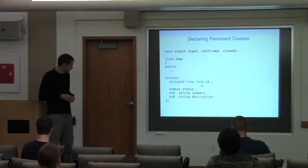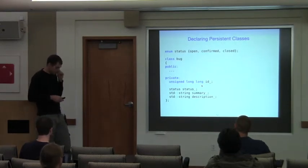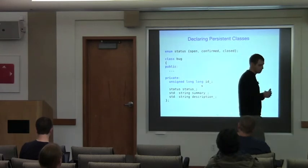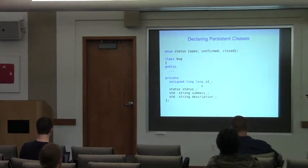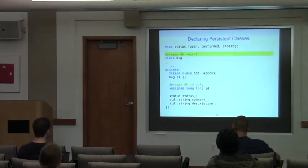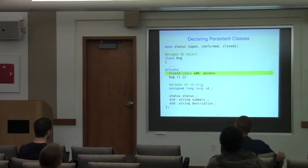Let's see some code. We are writing a simple bug tracker and the first version of our bug report has just four fields: the bug ID, the bug status which can be opened, confirmed, or closed, a short summary, and a full description. Let's see what it takes to convert this class to an ODB persistent object. The first change we make is add the object pragma, which tells the ODB compiler that this class is persistent and it needs to generate conversion code for it.